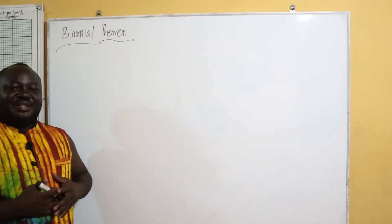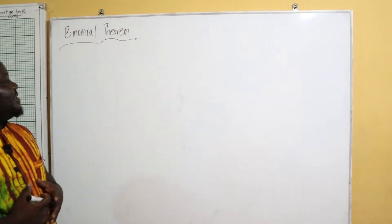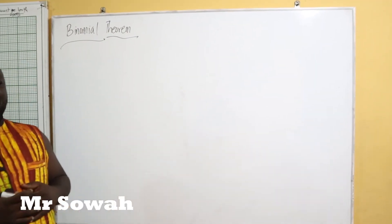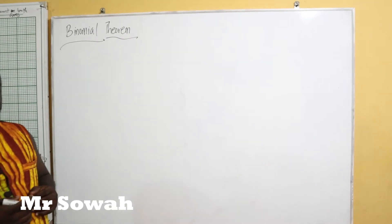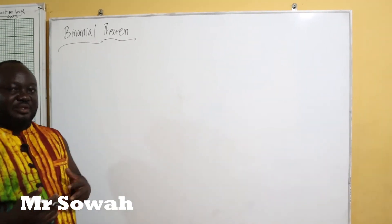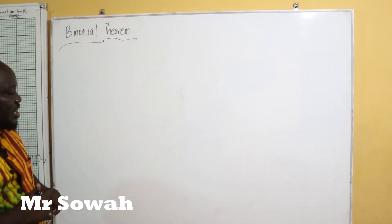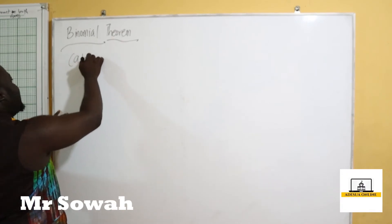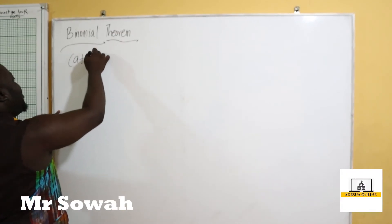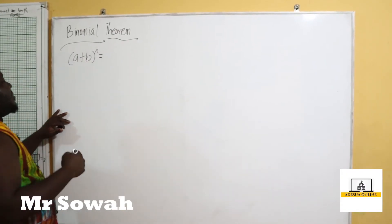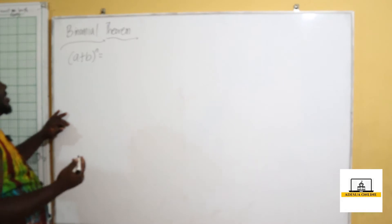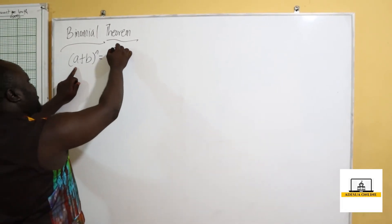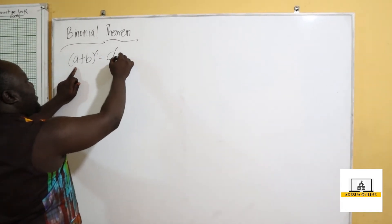We are going to continue the class by learning the binomial theorem. So this is the binomial theorem itself. If I have a plus b all raised to the power n, the binomial theorem says that this will become a raised to the power n.